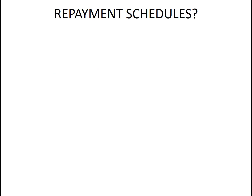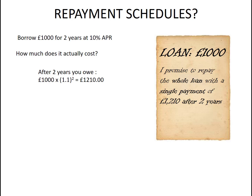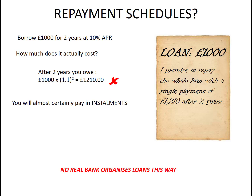Let's look at another imaginary loan situation. Suppose I want to borrow £1,000 for two years at 10% APR. After two years I owe £1,210, but no real bank organises loans where you pay nothing for two years and then pay the whole thing back in one go. When you borrow money you generally repay in equal instalments. Banks and lenders will say it will cost you this much per month. So now we're going to look at how those equal instalments are worked out by looking at some repayment plans.